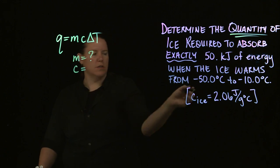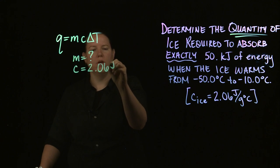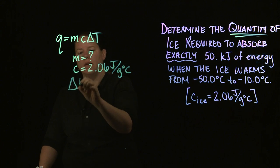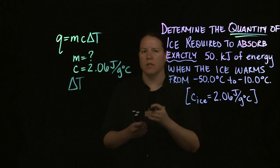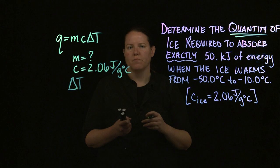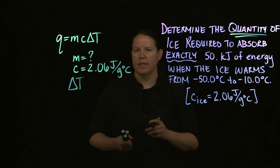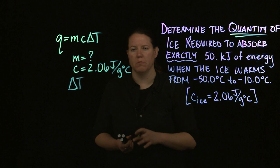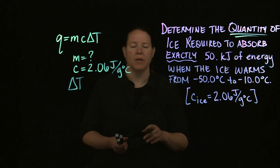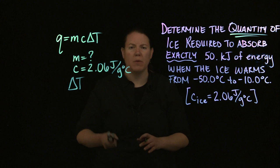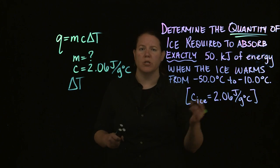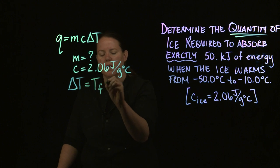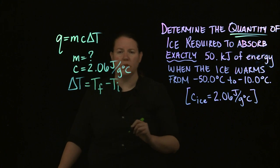C here is just given at the bottom, so that's pretty easy to label. Delta T is a little bit of a change if you've never seen this kind of labeling before. So delta T is actually a change in temperature. That's what delta means for the vast majority of the time in chemistry. Delta means change, T means temperature. We're looking for a change in temperature.